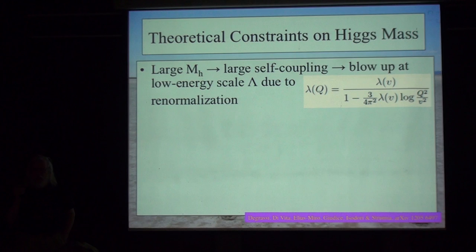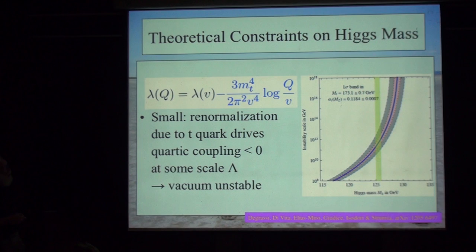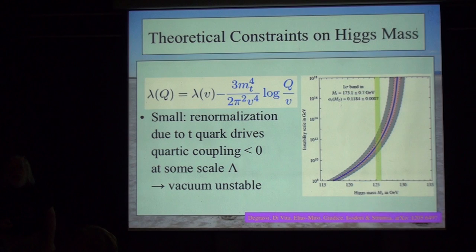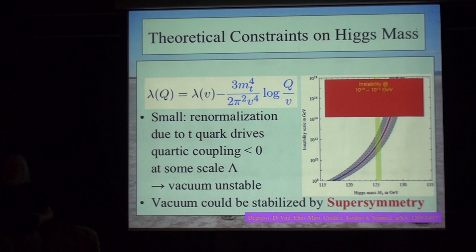I'm supposed to be talking about physics beyond the Higgs boson. One thing that convinces me there has to be something beyond the Higgs is its mass. When you calculate the theory and try to extrapolate to high energies, you have a problem: the effective Higgs potential — the Mexican hat, if you like — has an instability driven by the top quark. This picture shows the energy scale at which that instability sets in — somewhere around 10^10 GeV — unless you put in new physics, one example of which is supersymmetry.